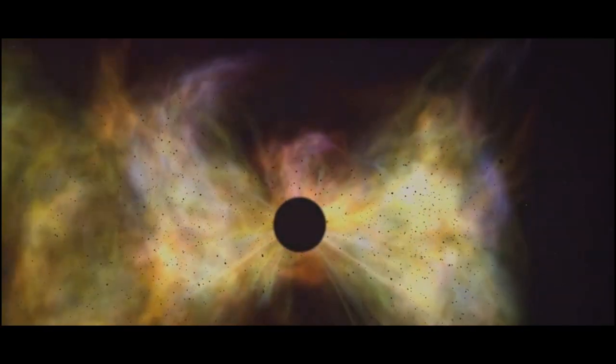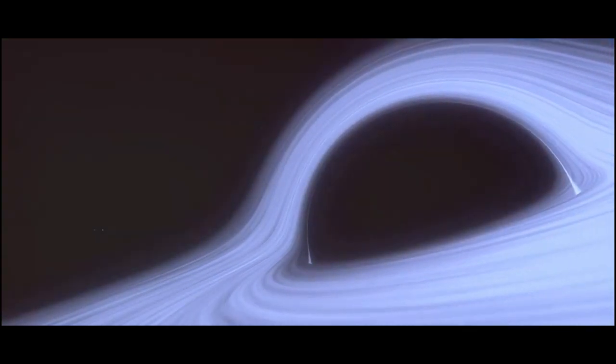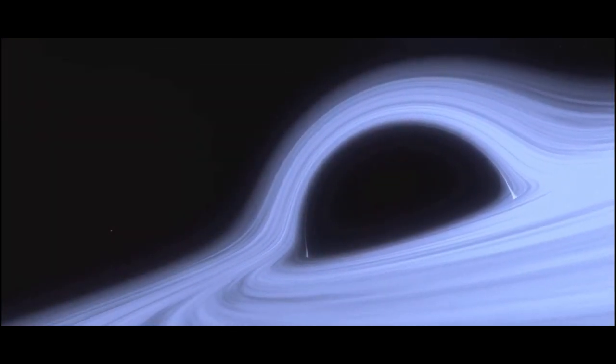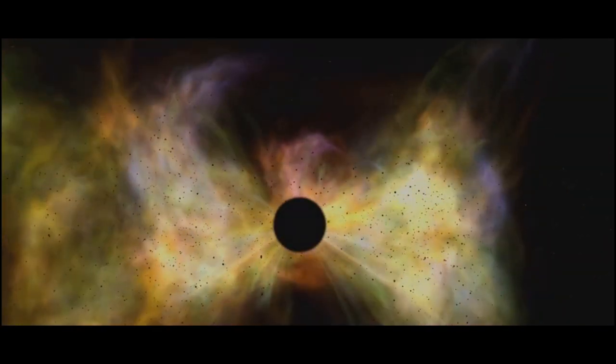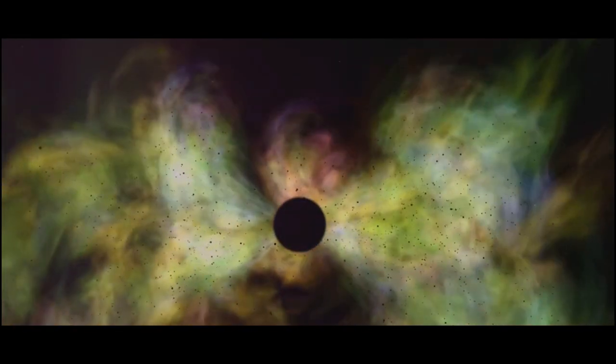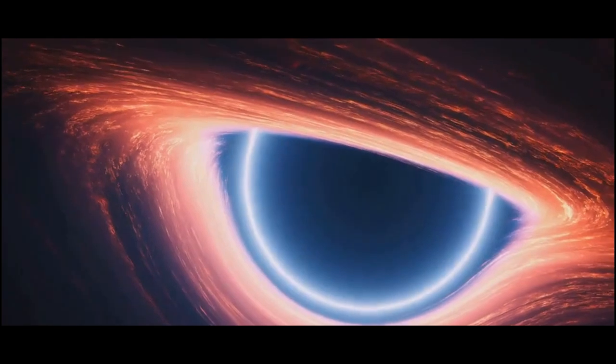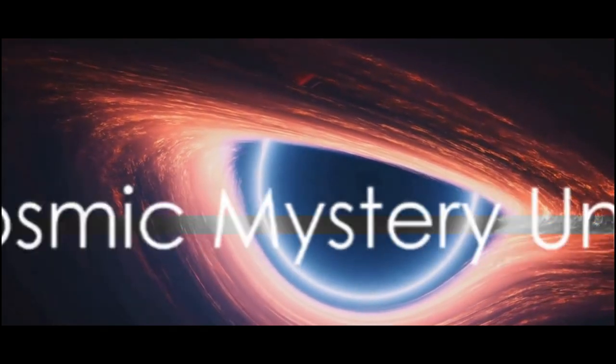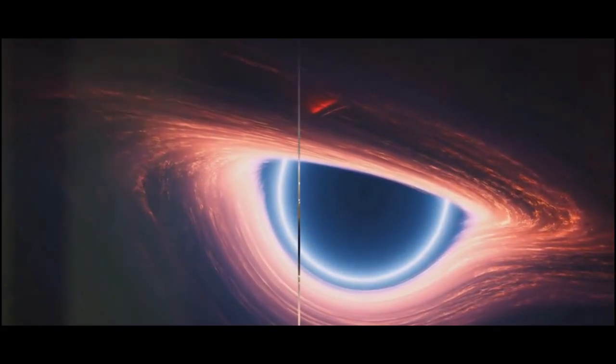The answer lies in the effects black holes have on their surroundings. They draw in dust and gas from nearby stars, creating a swirling disk of material known as an accretion disk. As this material spirals into the black hole, it heats up and emits x-rays. We can detect these x-rays and use them to learn more about the black hole. In essence, a black hole is a place in space where gravity pulls so much that even light cannot get out. This is the mystery that captivates us, the riddle that we strive to unravel as we journey through the cosmos.